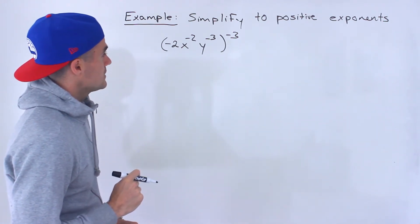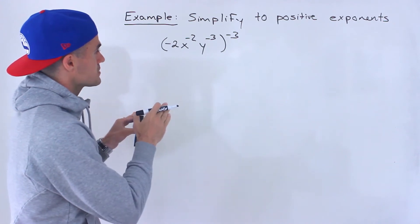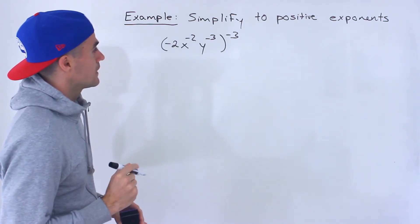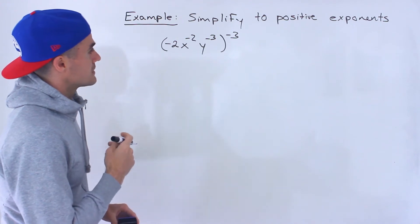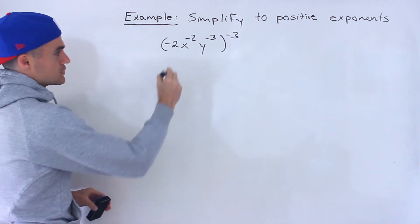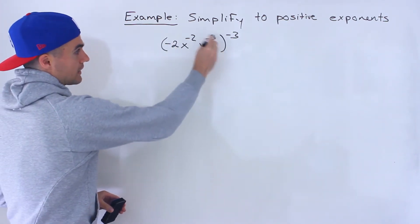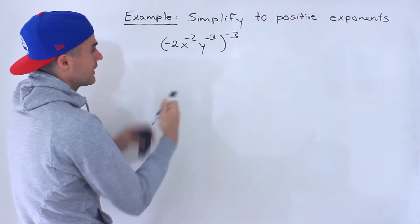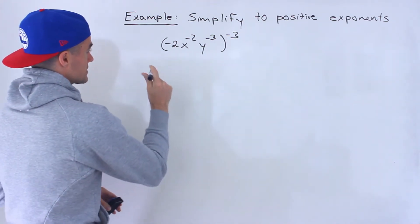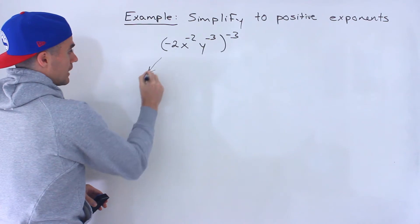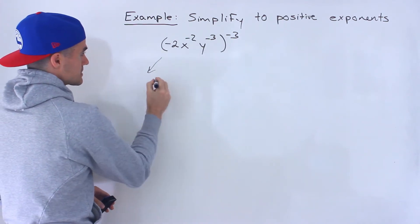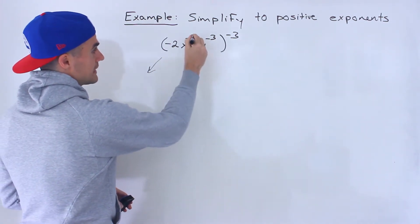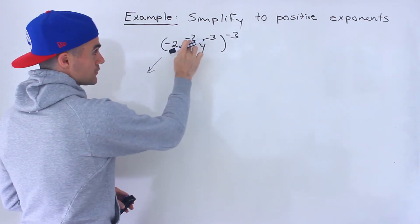There are different ways you can go about this, so I'll show you two different ways. Personally, when I get something like this, the first thing I like to do is take the innermost bracket and simplify it as much as possible. What I would do is simplify it in terms of making these exponents positive.